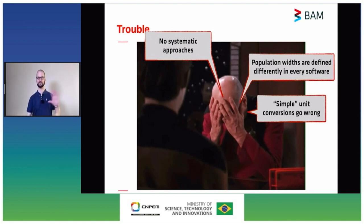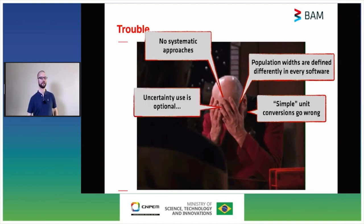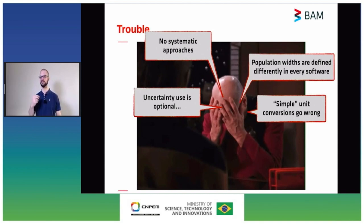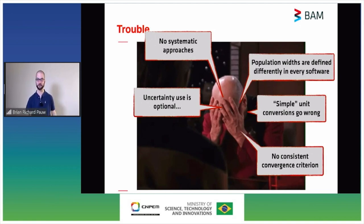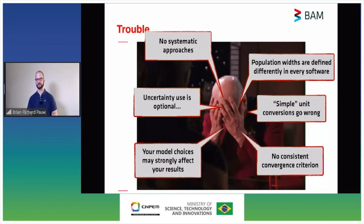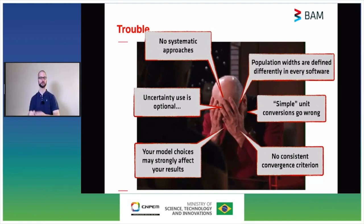Fourthly, uncertainty use is optional — I would highly recommend using uncertainties in a fit because they weight the fit towards more accurate data points and give a goodness-of-fit value with meaning, allowing you to qualify your fits against someone else's or against other models. Lastly, model choices may strongly affect your results: choices of structure factor influence the population parameters you extract from size distributions.